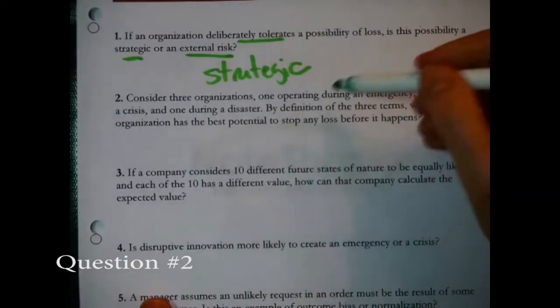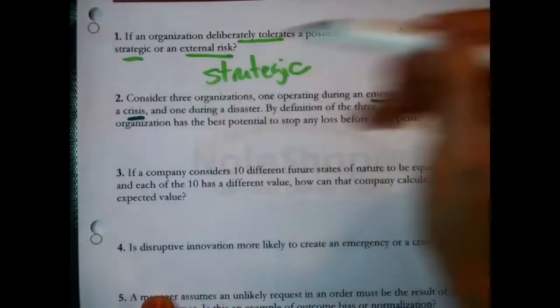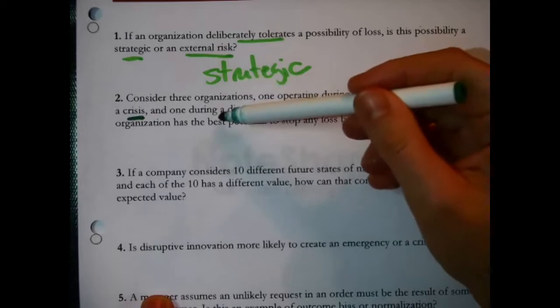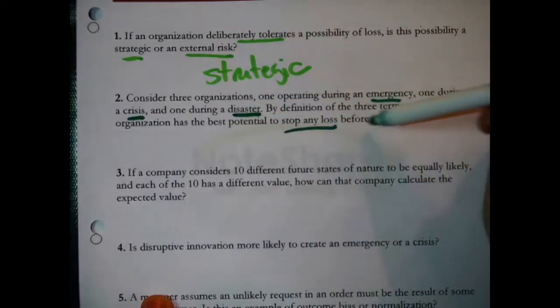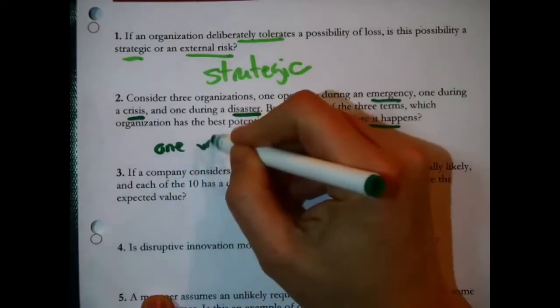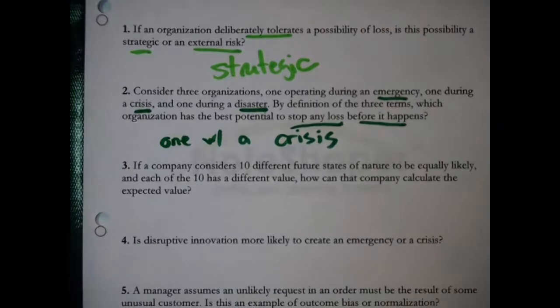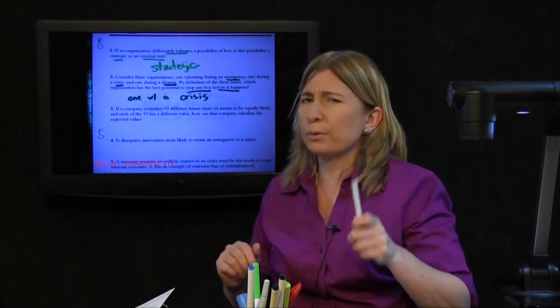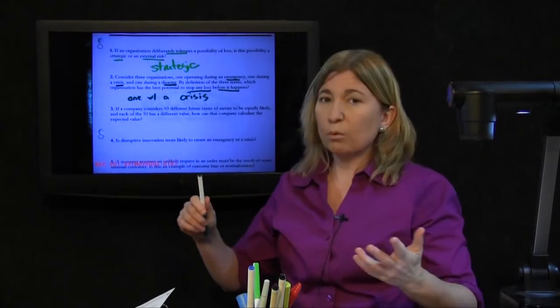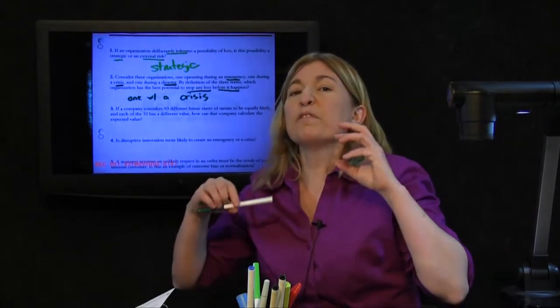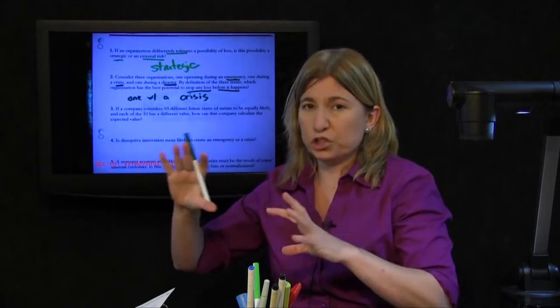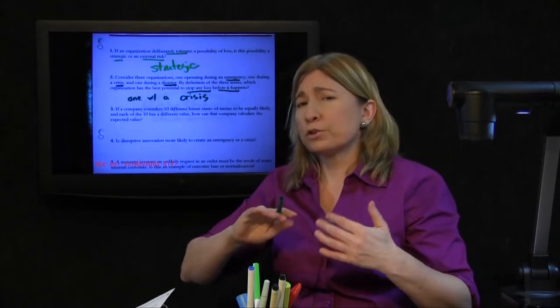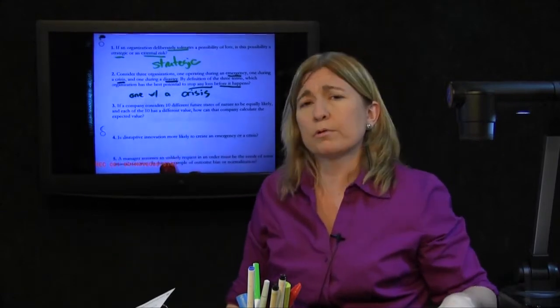Consider three organizations: one operating during an emergency, one operating during a crisis, and one operating during a disaster. By definition of these three terms, which organization has the best potential to stop any loss before it happens? That is the one with a crisis. The organization operating during a crisis is best positioned to stop a loss before it happens because of the definition of a crisis. A crisis is the period before a significant change of great consequence. An emergency is happening and a disaster has happened. It's only a crisis that you have any runway that you might stop something before it happens.